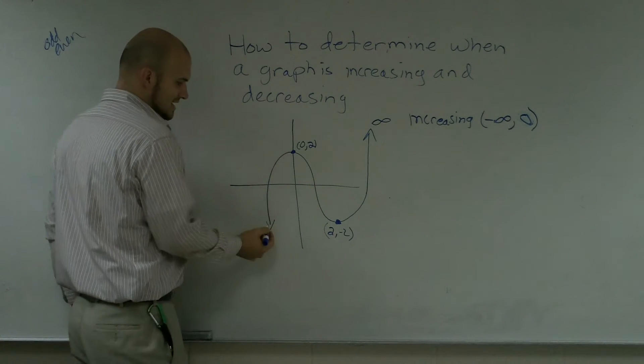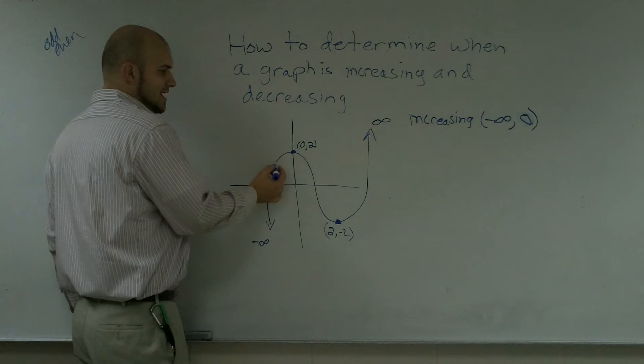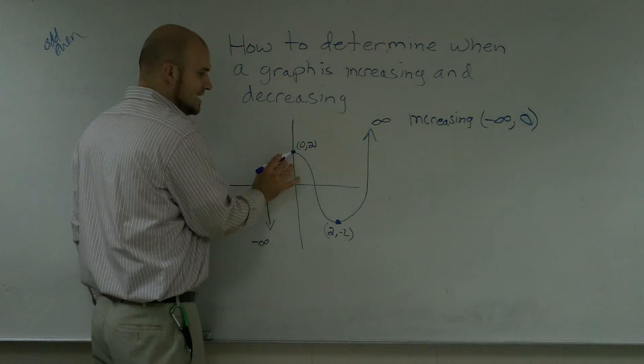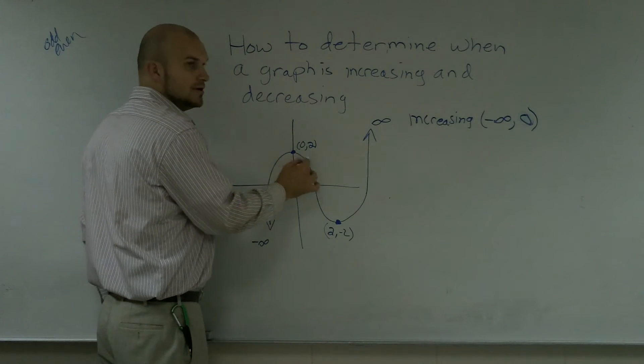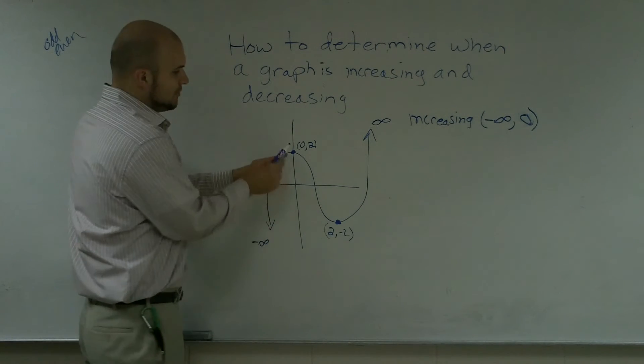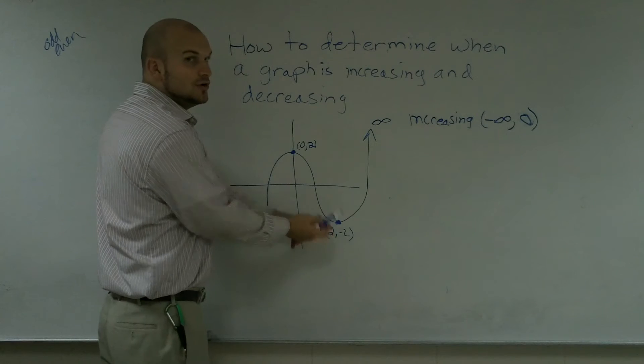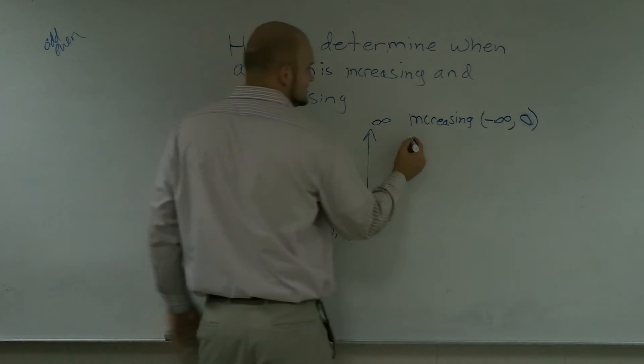As you notice, first it's increasing very highly, then it's starting to taper off to almost constant. At this point it's not increasing but has changed to now decreasing. Between the points of zero and two my graph has now become decreasing.